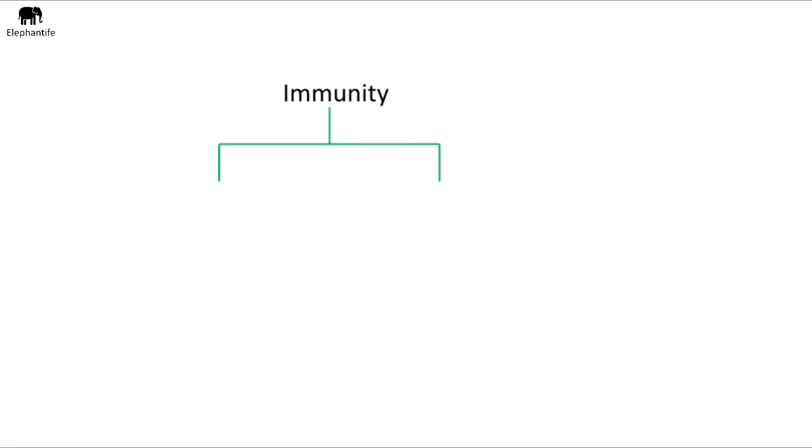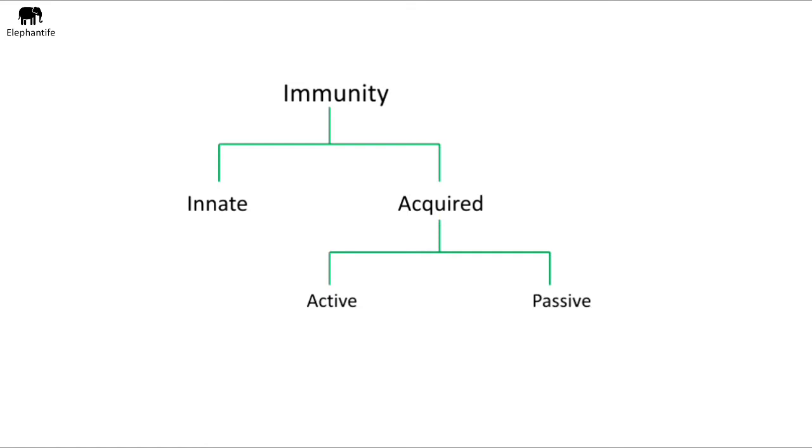Our immune system consists of innate and acquired immunity. We are born with innate immunity — it is controlled by your genes. But we develop acquired immunity throughout our lifetime. Acquired immunity can be of two types: active immunity and passive immunity. Both can come from natural and artificial sources.